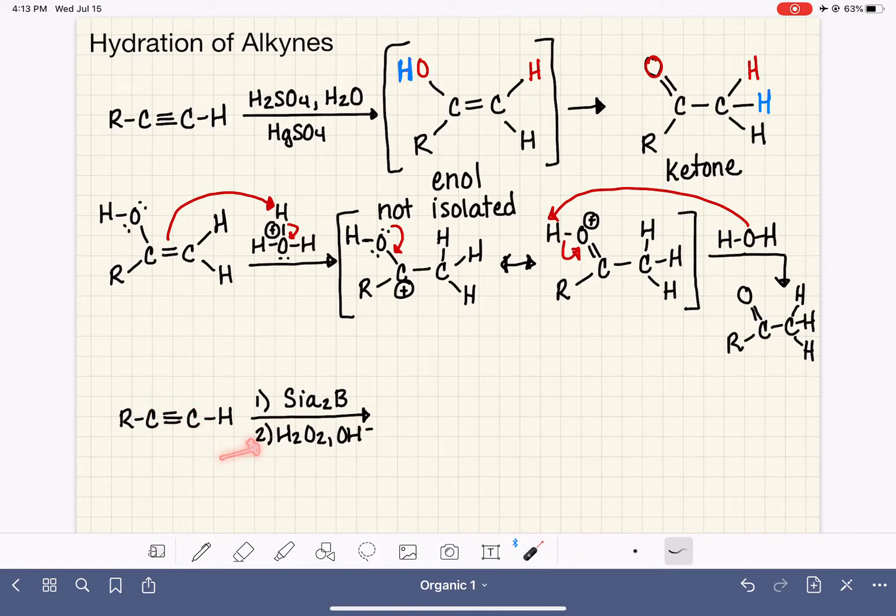So with an alkene, up here we had BH3THF. And here we have a slightly different boron reagent. This is disiamyl borane followed by hydrogen peroxide in water. And again, this is going to give us anti-Markovnikov addition of water. So that means the hydrogen that we add is going to go on the other carbon and the OH goes on this carbon.